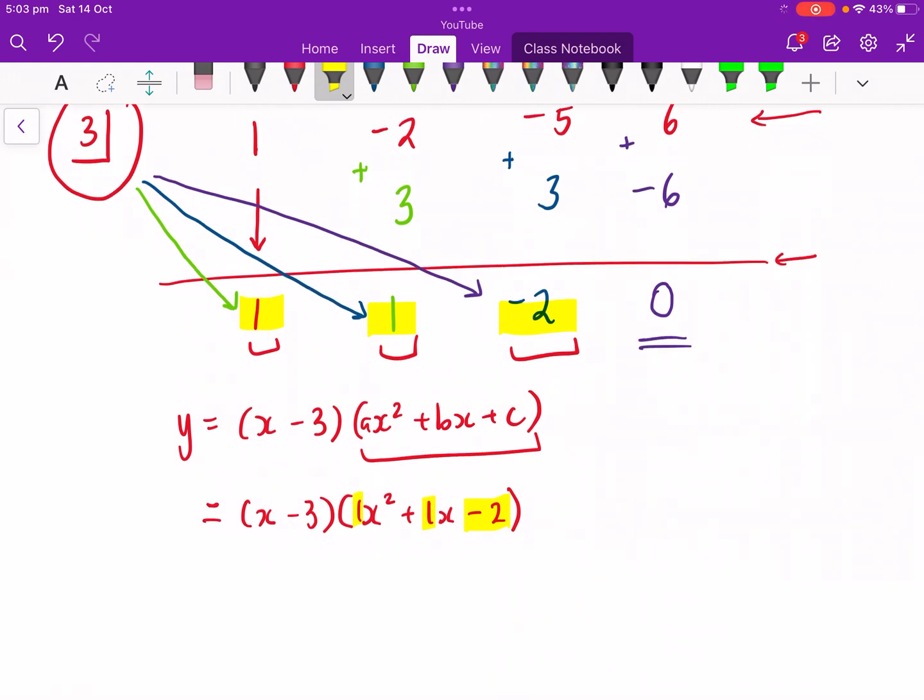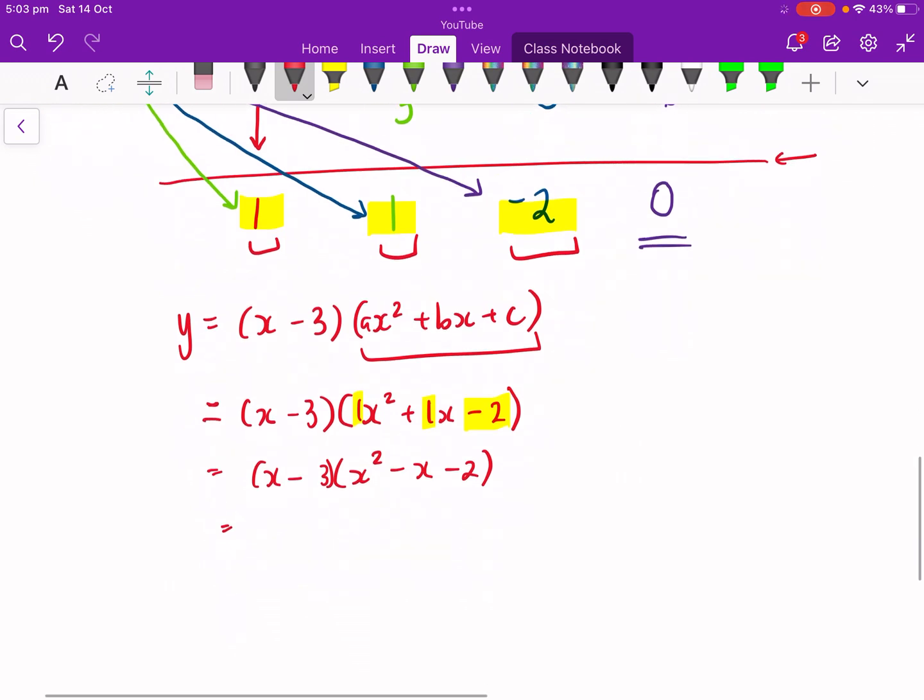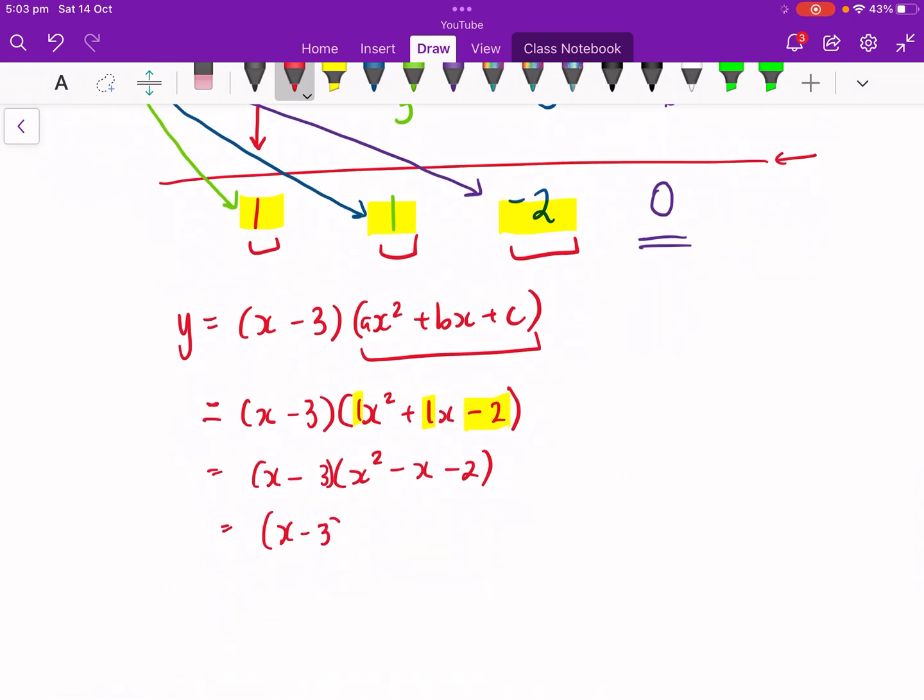So now we've got this. I'm just going to rewrite it without the ones just because I like it that way. We're going to now apply our factorizing of the quadratic. So we're going to go x minus 3. x plus 2. Oh, sorry. That should be a plus. So x plus 2. x minus 1. And there we go.